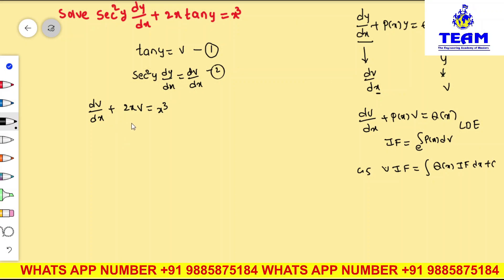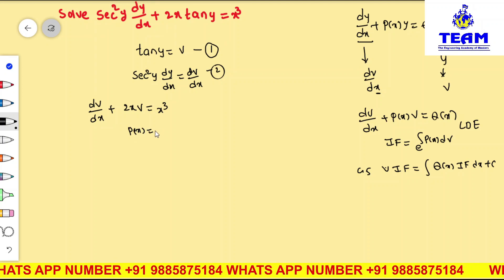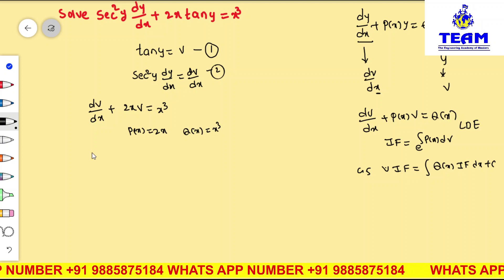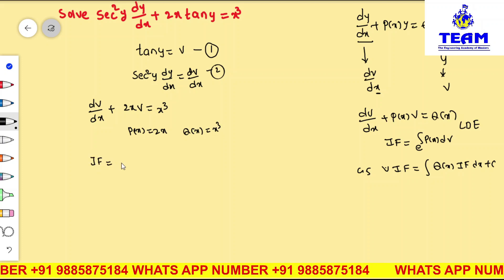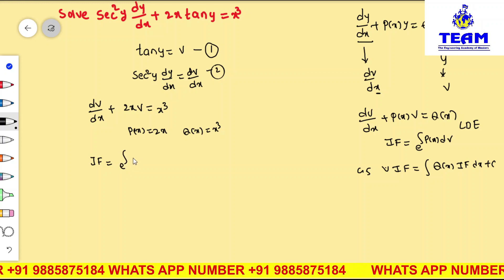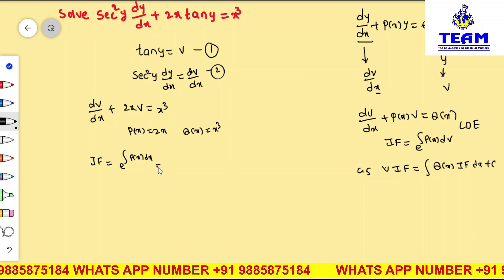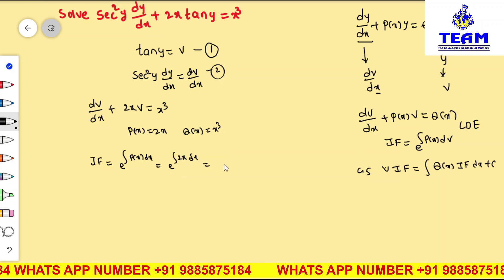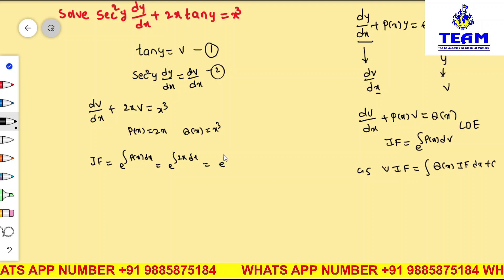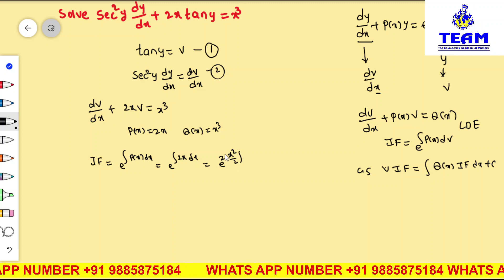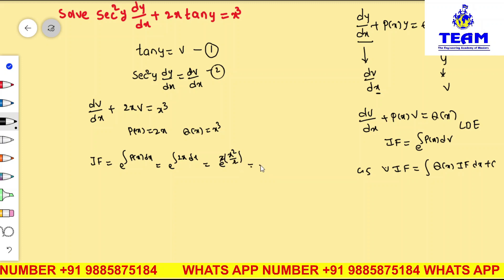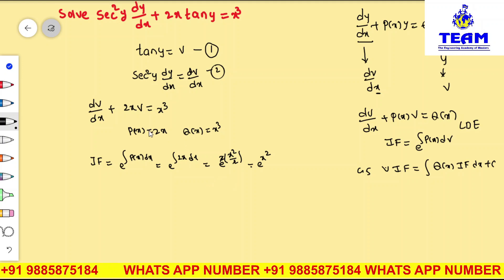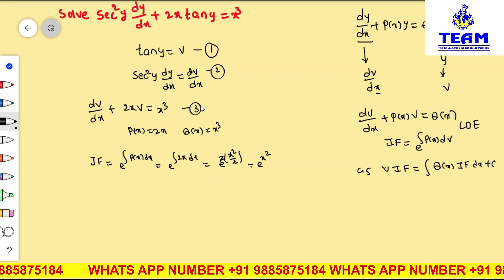Comparing with the standard form, P(x) = 2x and Q(x) = x³. The integrating factor is e^(∫2x dx) = e^(x²), since the 2s cancel. So e^(x²) is the integrating factor for equation 3.